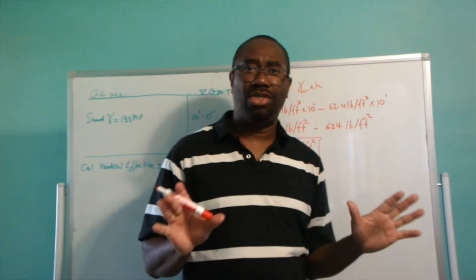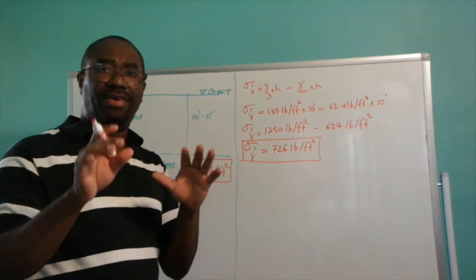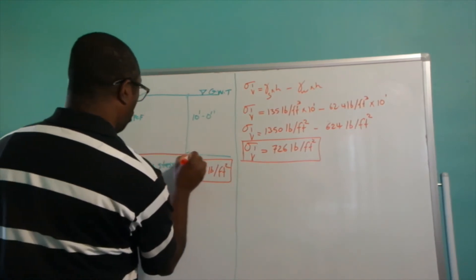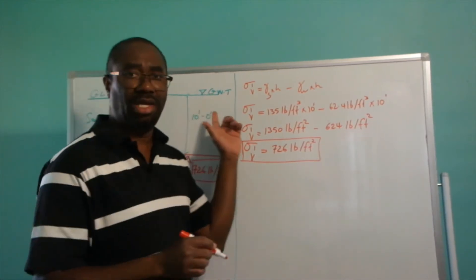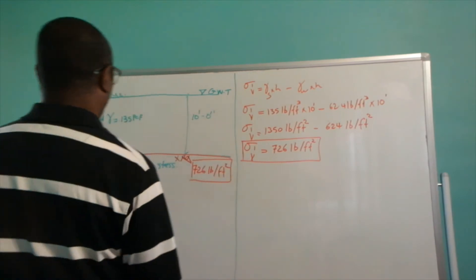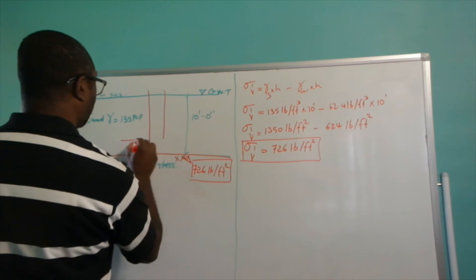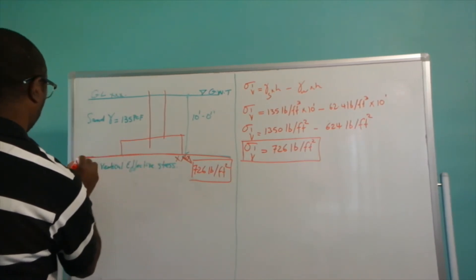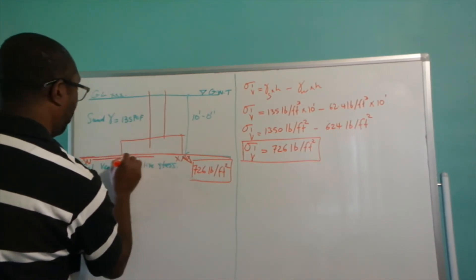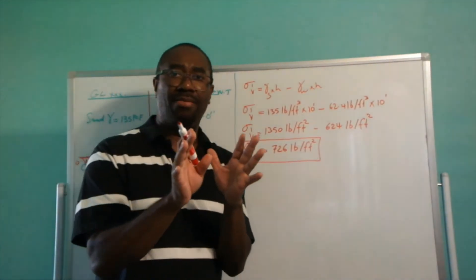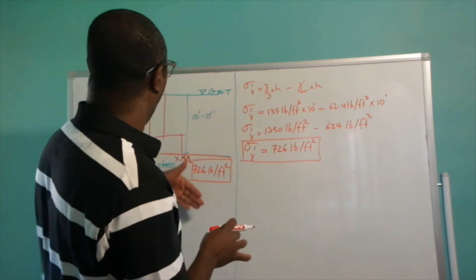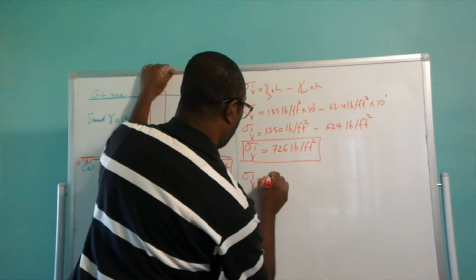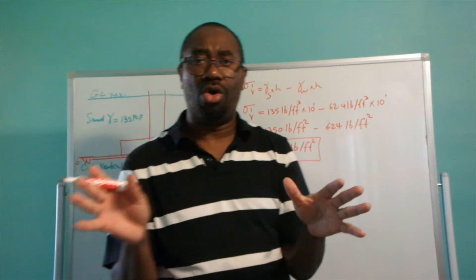I want to bring to your attention: if you're calculating the vertical effective stress and the groundwater table is below the depth of your foundation, then you do not need to incorporate the water table term. If your foundation is placed here and the groundwater table is below the foundation, then your stress-v-prime is only going to equal gamma-soil times height, because there is no groundwater table above your foundation level.